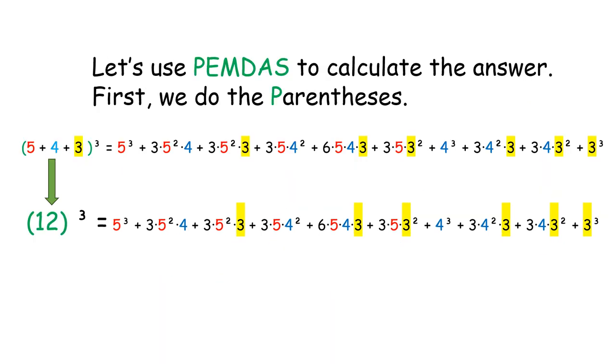Let's use PEMDAS to calculate the answer. First, we do the parentheses. 5 plus 4 plus 3 is in parentheses. That equals 12.